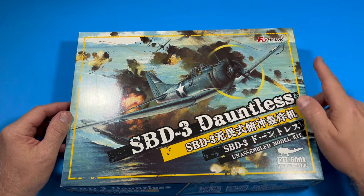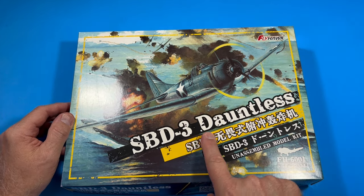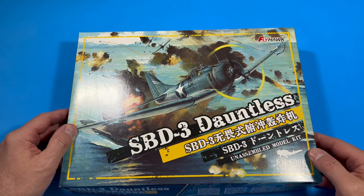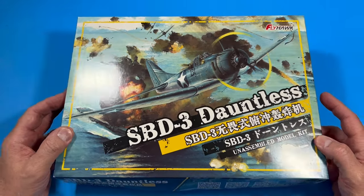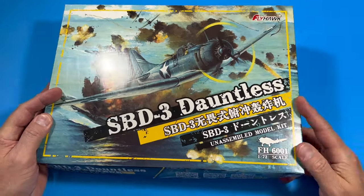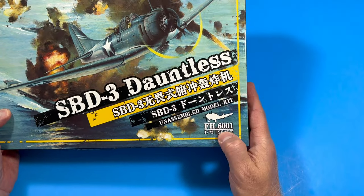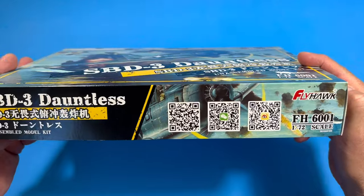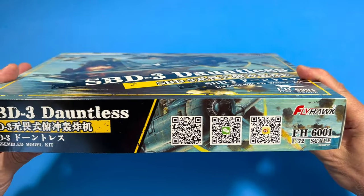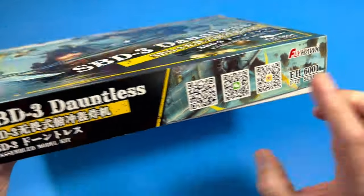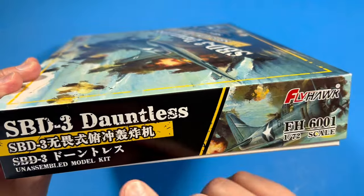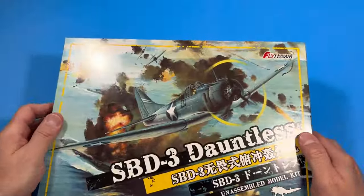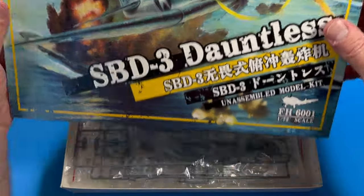This is the Flyhawk 1/72nd SBD-3 Dauntless. I have never built a Flyhawk kit before, and I've never really even seen one until I got this in the mail. So this is Flyhawk 6001. I think Flyhawk's out of China. They've got some QR codes there. Nothing I can read. So let's see what we have.